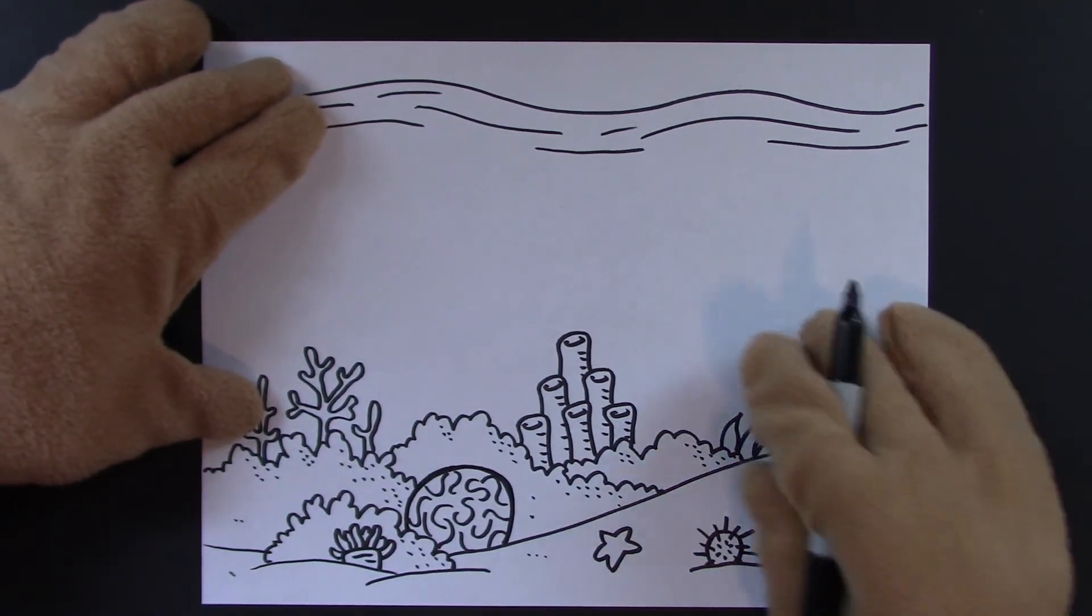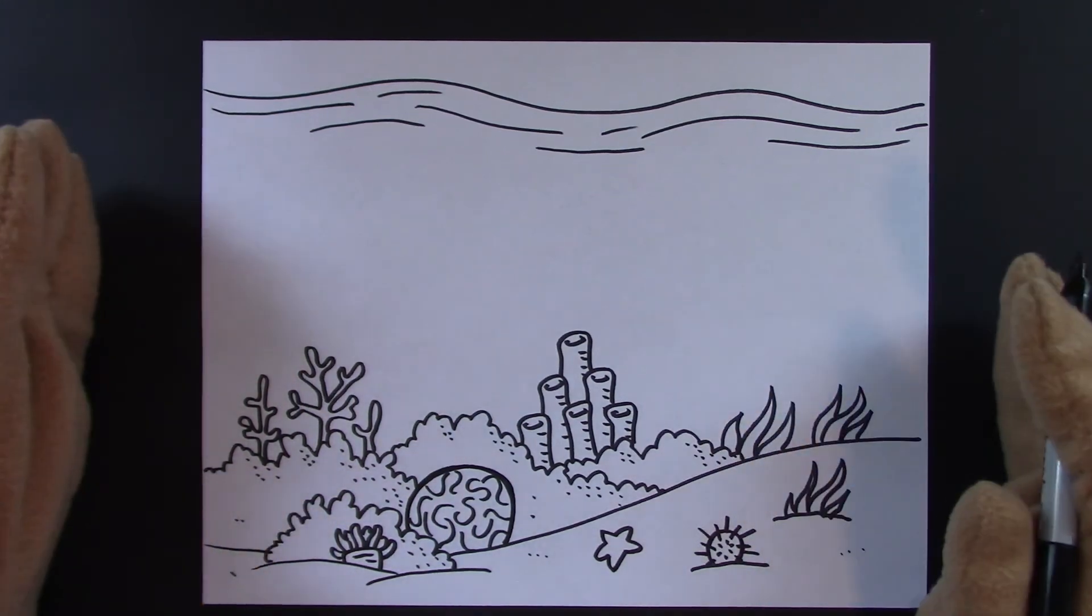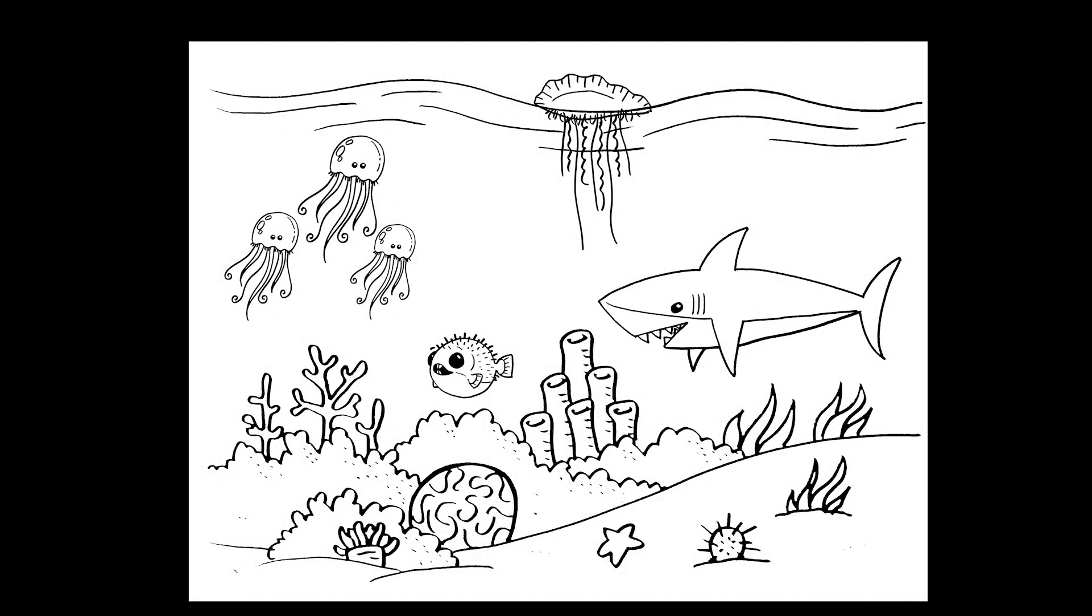I think this is good. That's our background. We'll add our sharks, our man-o-war, our jellies, and our puffer fish. Add a few bobos if you like. It'll be a great picture. Great job.